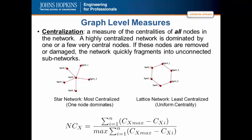A highly centralized network — that's with a centralization value that's high, closer to one — is a network that is dominated by one or a few nodes. If these nodes are removed or damaged, the network quickly fragments into unconnected subnetworks.